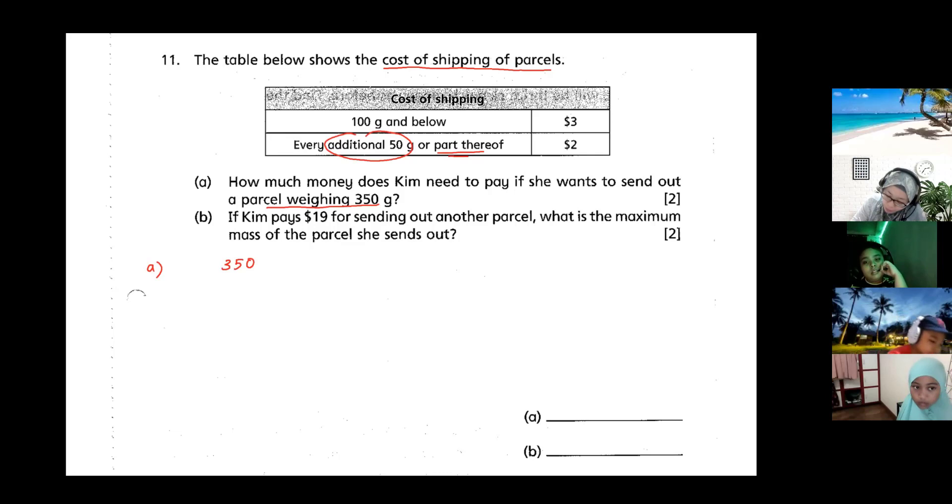So you put 350 gram. The first 100 gram, you know it is three dollars. The balance will be 350 grams, you take away 100 gram, you're left with 250 grams.